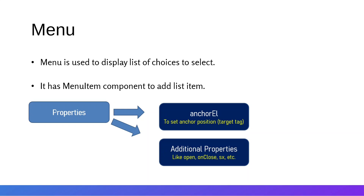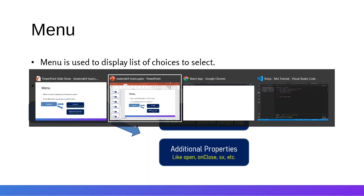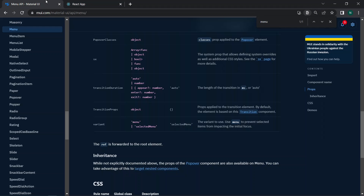Additional properties include 'open' — whenever 'open' is true, the menu will be opened. In the 'onClose' callback, whenever the menu is closed, we need to specify a function to perform a task. We also have the 'sx' prop for styling the list.